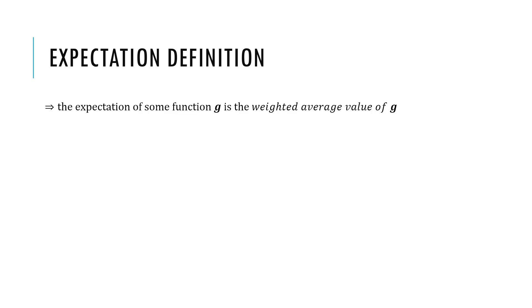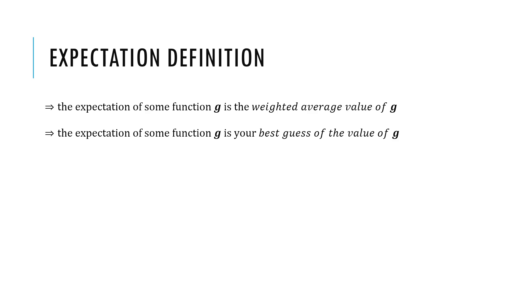There are two equivalent ways to think about expectations. First, the expectation of some function g is the weighted average value of g, where the weights are given by the underlying probability distribution. Second, the expectation of some function g is your best guess of the value of g if you were to draw a single item from the underlying probability distribution.